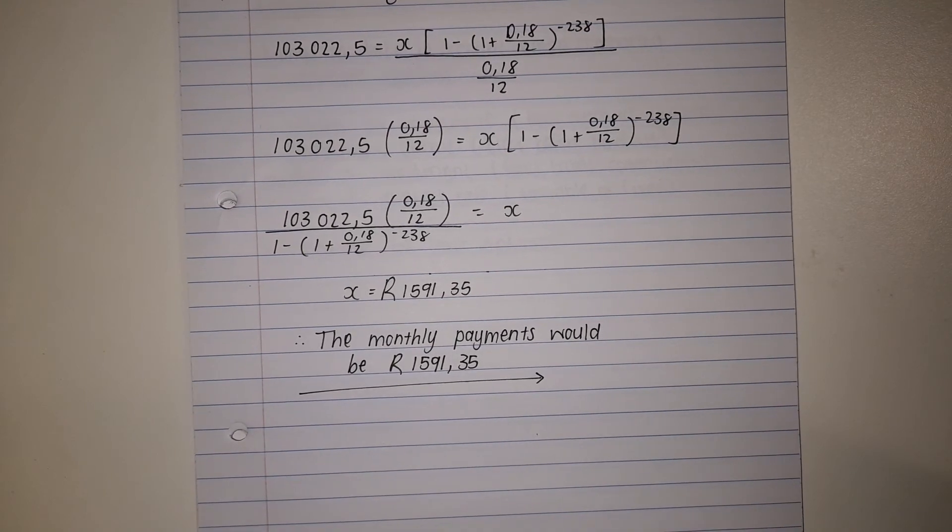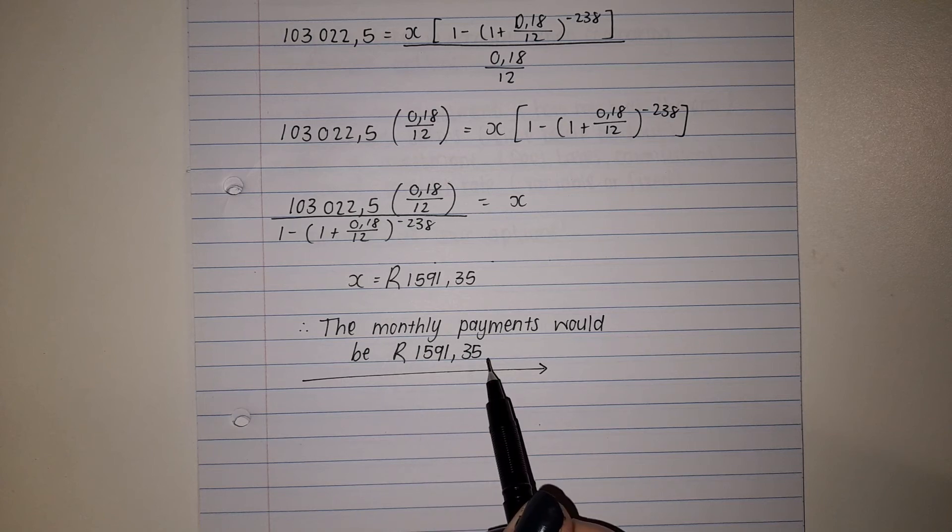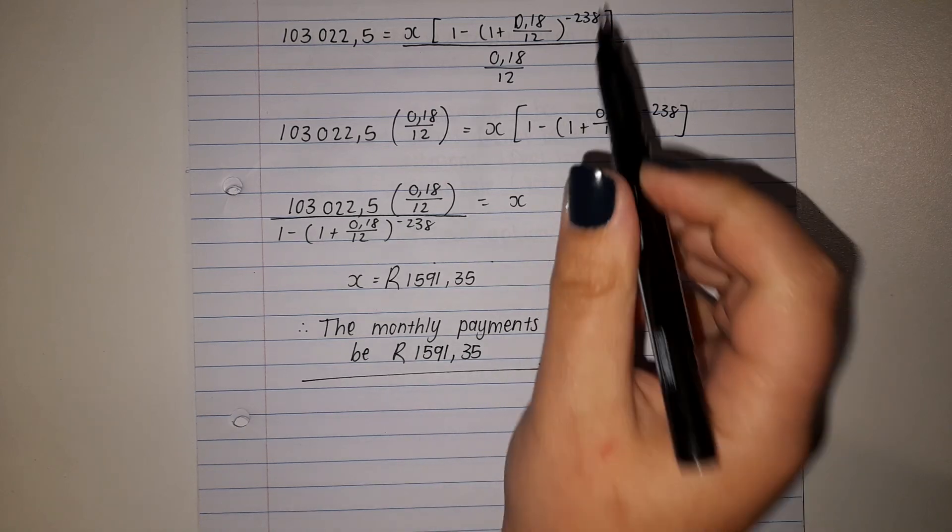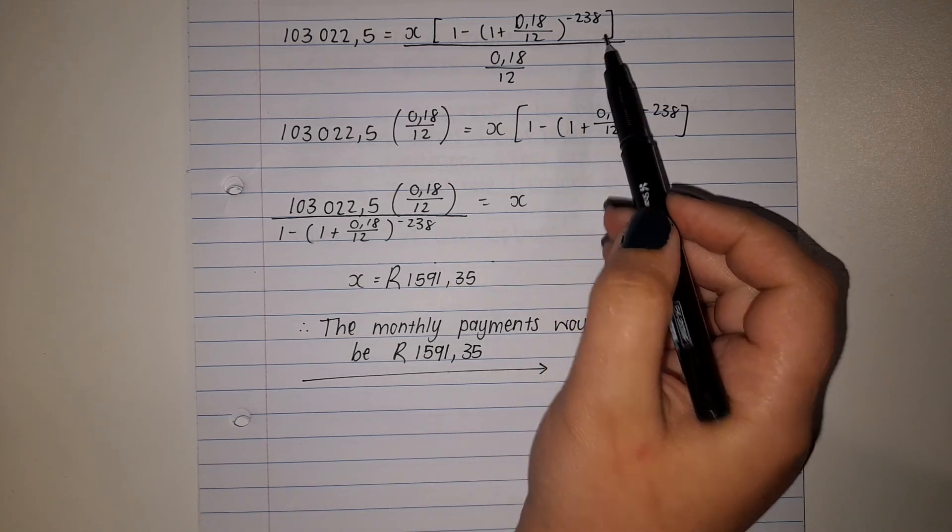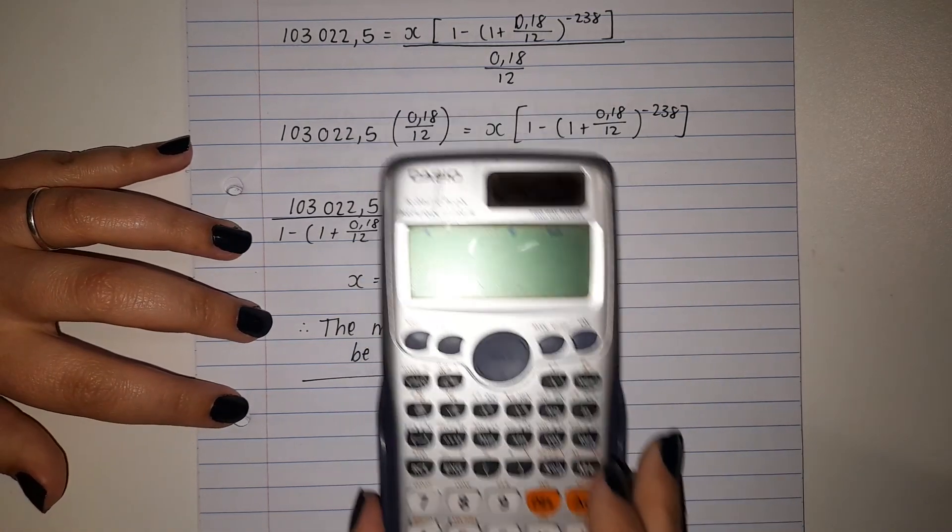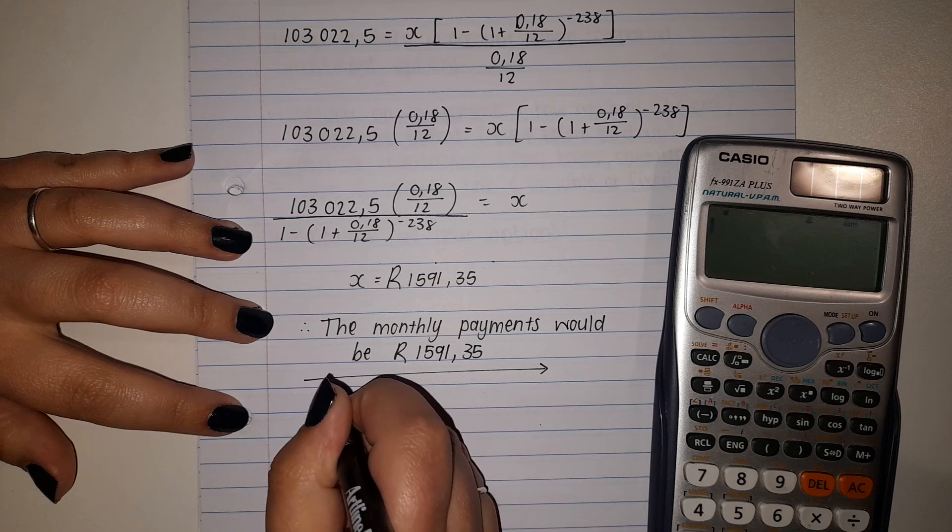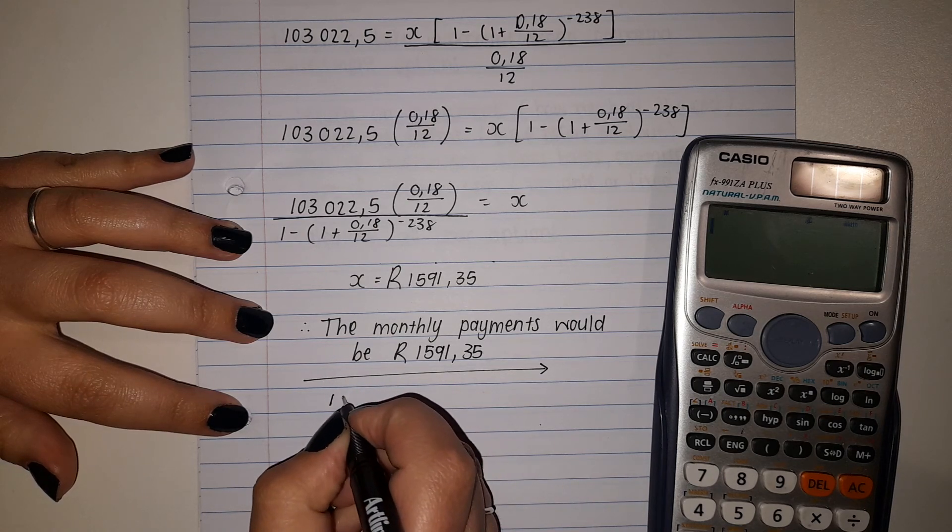Now they can also ask you with this question. If this is the monthly installment that she needs to pay for 238 times, what would be the final value that she pays back?